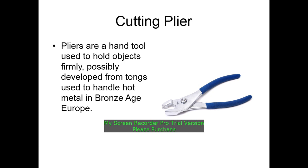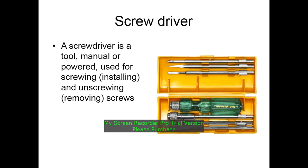Hand tools such as pliers, developed from tongs, are used to hold objects firmly and to handle hot metal. A screwdriver is a tool used manually or by power to screw in and unscrew, or install and remove screws.